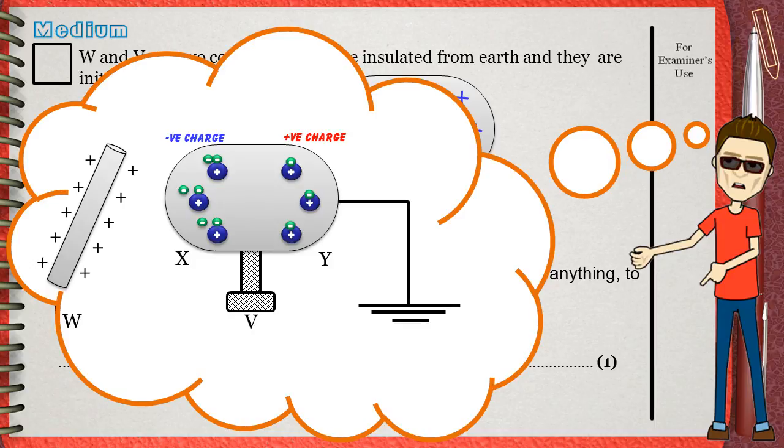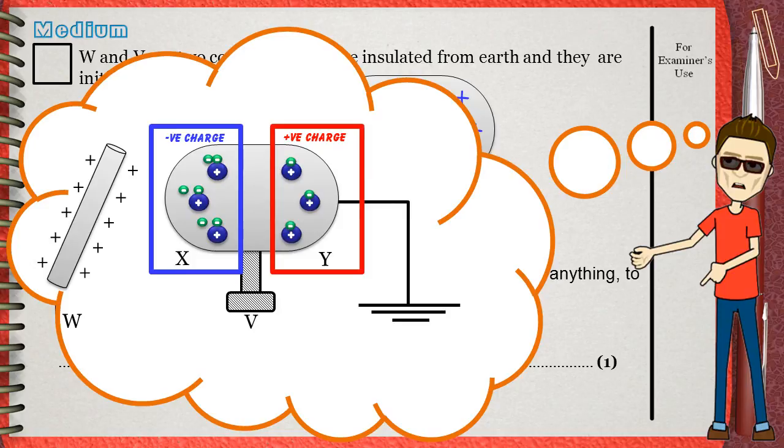So as you see, no changes take place at side X, it's still negative. But at side Y, it's not positively charged anymore, now it's neutral.